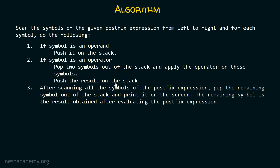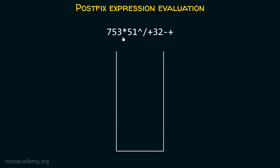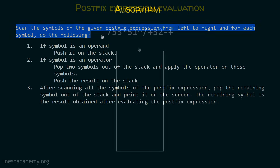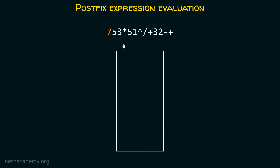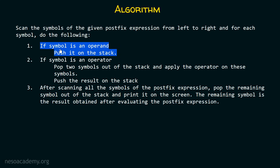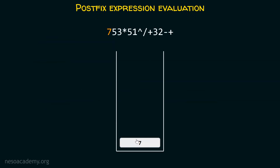Let's evaluate this algorithm step by step. We have the postfix expression: 7 5 3 star 5 1 power divide plus 3 2 minus plus, and we have a stack. We scan symbols from left to right. We encounter 7 — this is an operand, so we push it onto the stack. Then we push 5, then we push 3 onto the stack.